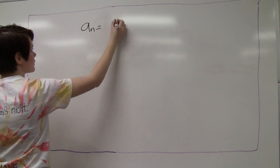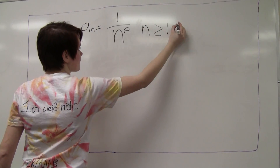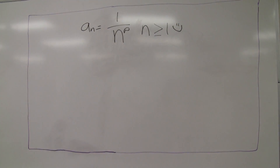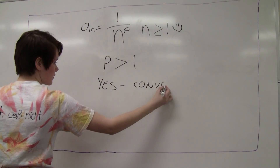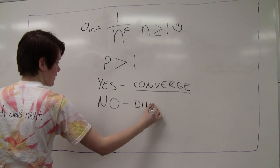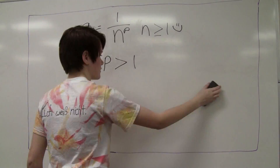Does your function look like 1 over n to the p? If n is greater than or equal to 1, you should be happy. You will converge if p is larger than 1. If not, you diverge. P-series test is quite fun. Gonna test some series, it'll make you weary. Test for divergence with a sense of urgency.